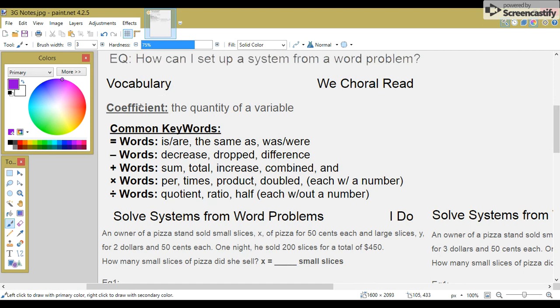Vocabulary. Coefficient: the quantity of a variable. Common keywords. Equal words: is, are, the same as, was, were. Subtraction words: decrease, dropped, difference.